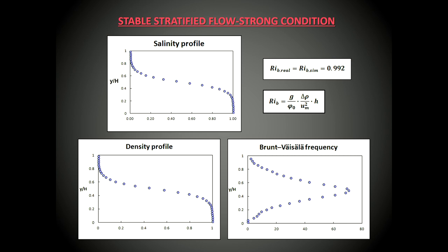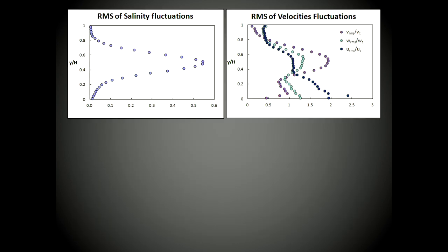This is the case of strong stratification, and the Richardson bulk number is almost one. In this case we imposed the jump of salinity. This is the salinity profile, dimensionalized, as are the other plots: the density profile and the Brunt-Väisälä frequency, which has a higher value compared to the weak condition, and the RMS of salinity fluctuation and of velocity fluctuations, which has this shape because of the internal waves. The next step is to introduce the turbine and to see what happens to the stratification and also to the wake and the efficiency of the turbine.